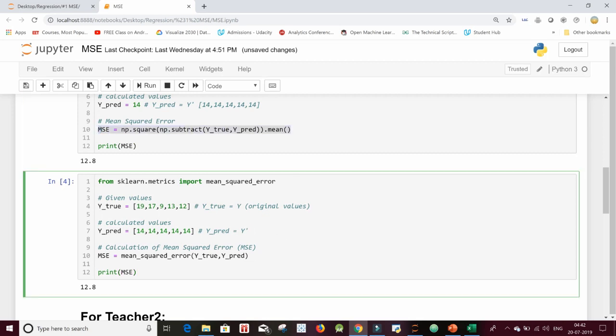So how can the same thing, without writing all of this logic, be done using scikit-learn? Scikit-learn has a sub-module known as metrics, and in these metrics for evaluating our model, we are having mean squared error. So from scikit-learn, that is sklearn.metrics, I have imported this mean_squared_error directly. And again, I have declared the true values in a list format and the predicted value also in a list format.